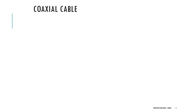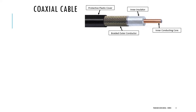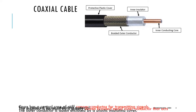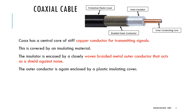The next guided medium for transmission is coaxial cable. The structure of coaxial cable is as shown in the figure. It consists of an inner conducting core, which is covered by an inner insulator. The inner conducting core is normally a copper conductor used for transmitting signals. The inner insulator is enclosed using a woven braided metal cover conductor that acts as a shield against noise. The entire inner part is again protected using a protective plastic cover.